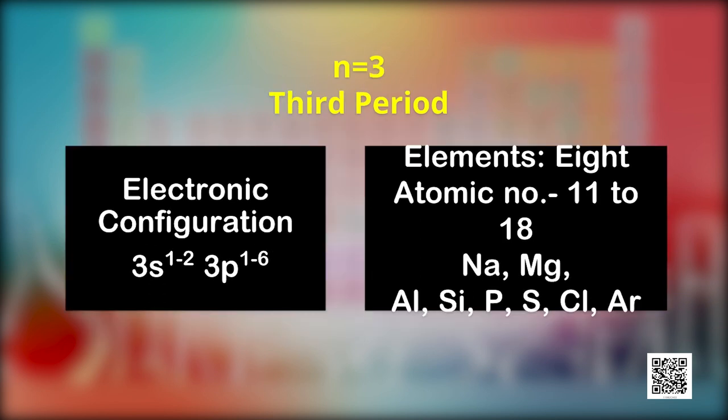The third period corresponds to the third energy shell (N=3), which has 3s, 3p, and 3d subshells. According to the Aufbau principle, electrons are added in order of increasing energy. Since the energy of the 3d subshell is higher than that of the 4s subshell, in the third period electrons are filled only in 3s and 3p subshells — one 3s orbital and three 3p orbitals accommodate a maximum of eight electrons. Therefore, there are eight elements in the third period, not 18.